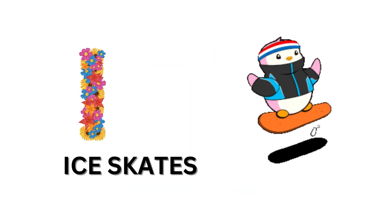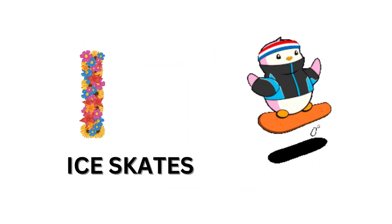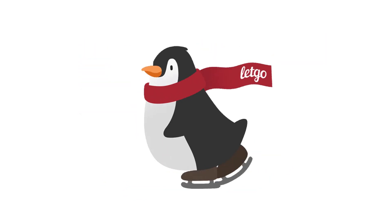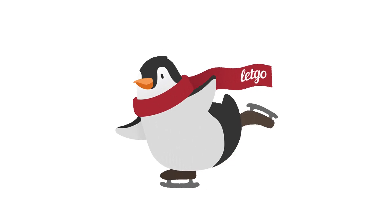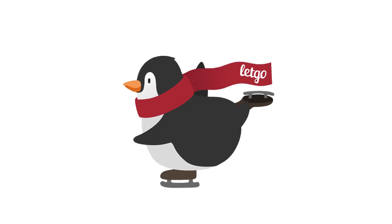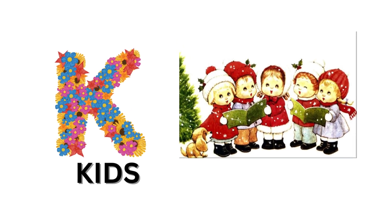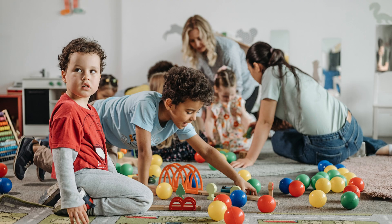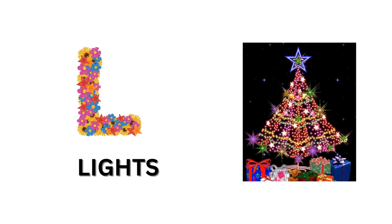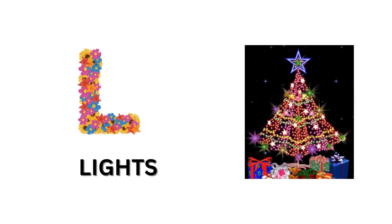I is for ice skates, I, I, ice skates. J is for jingle bells, J, J, jingle bells. K is for kids, K, K, kids. L is for lights, L, L, lights.